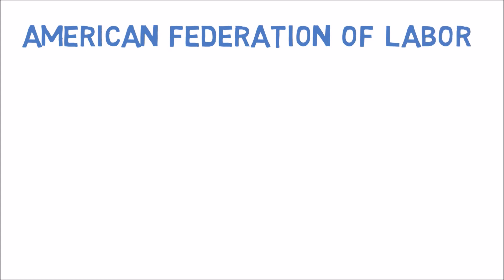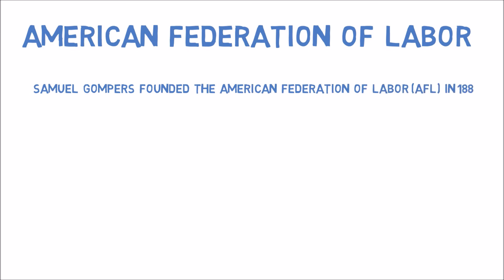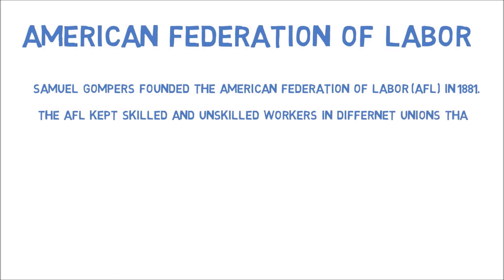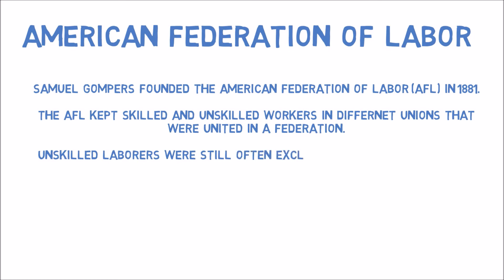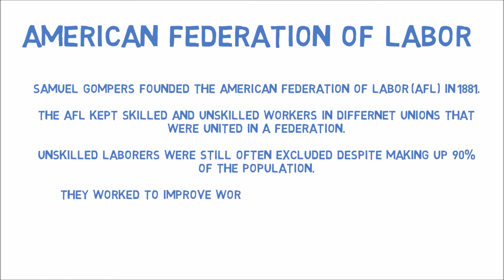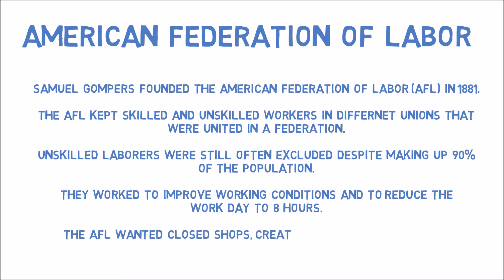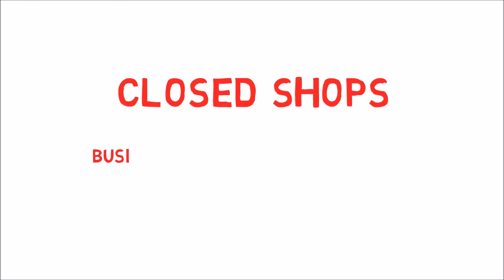Samuel Gompers founded the American Federation of Labor (AFL) in 1881. The AFL kept skilled and unskilled workers in different unions united in a federation. Unskilled laborers were still often excluded despite making up 90% of the population. The AFL worked to improve working conditions and reduce the work day to 8 hours, and wanted closed shops — businesses where only union members were hired — creating greater job security.